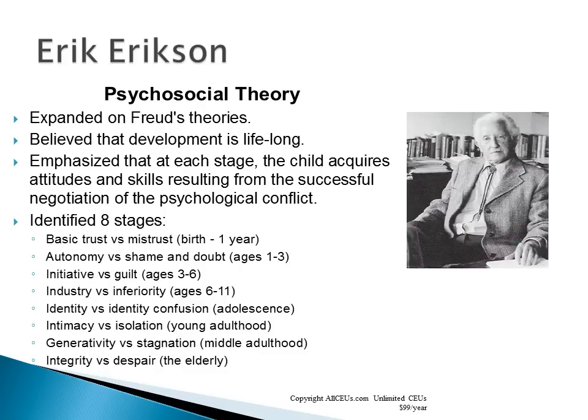In adolescence, Erikson describes identity versus identity confusion — who am I, what do I stand for? Intimacy versus isolation is young adulthood, when you're looking for a potential life partner. Generativity versus stagnation is middle adulthood, when you're working on your career and making your mark. Finally, integrity versus despair is when people look back over their life and assess whether they accomplished what they wanted, or feel they didn't do much.